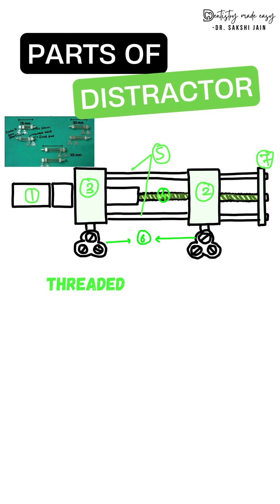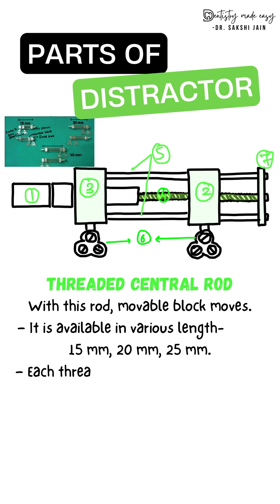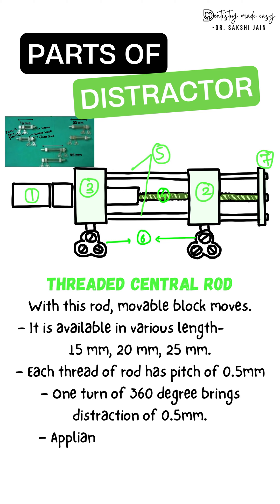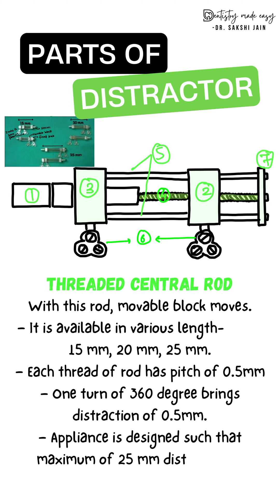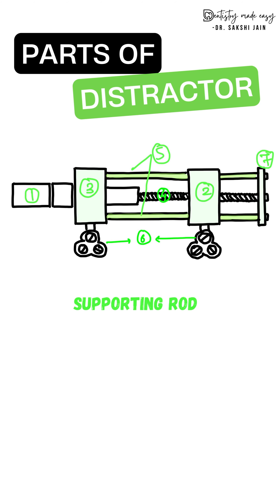The next part is the central threaded rod. The movable block moves along this rod. It is available in various lengths, and each thread of the rod has a pitch of 0.5 millimeter. One full turn of 360 degrees delivers a distraction of 0.5 millimeter. The appliance is designed so that a maximum of 25 millimeters of distraction can be achieved.